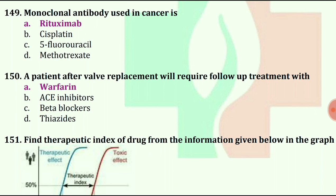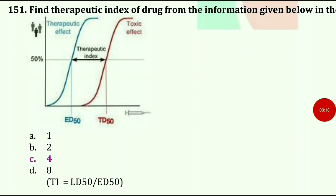Find therapeutic index of drug from the information given below in the graph. Answer is 4.